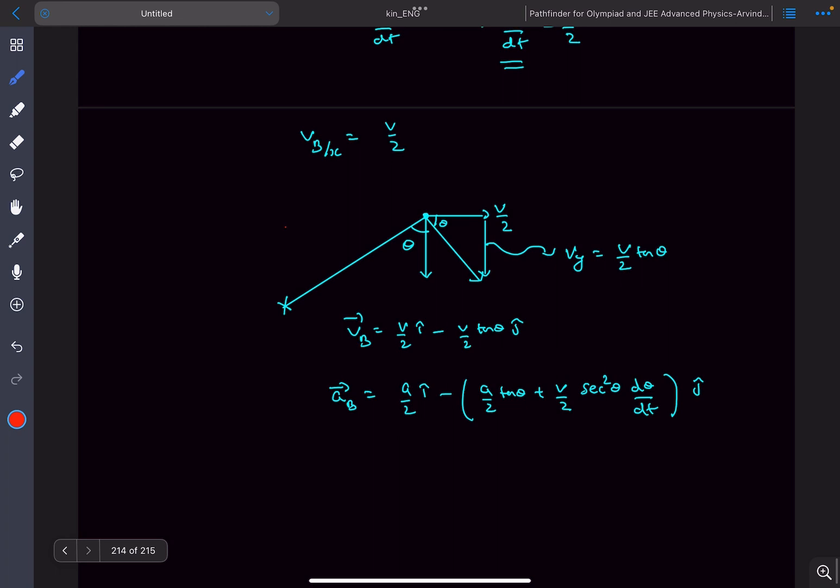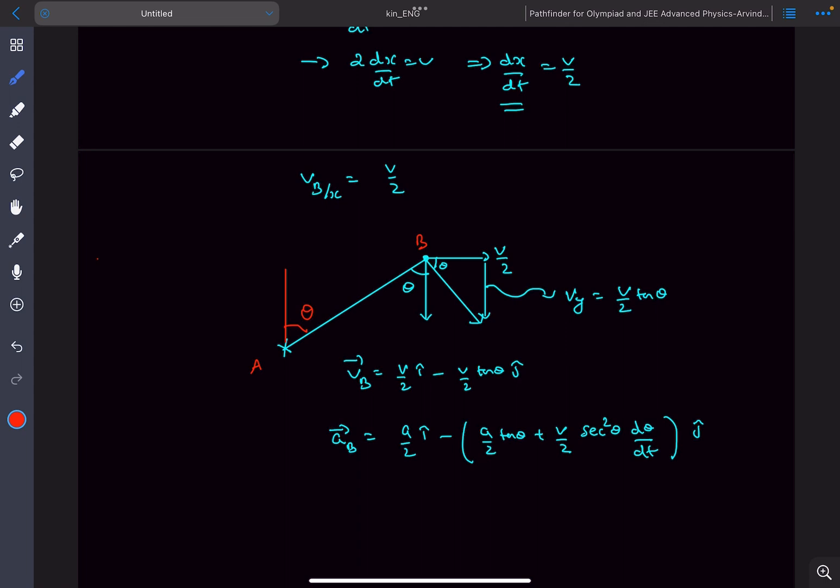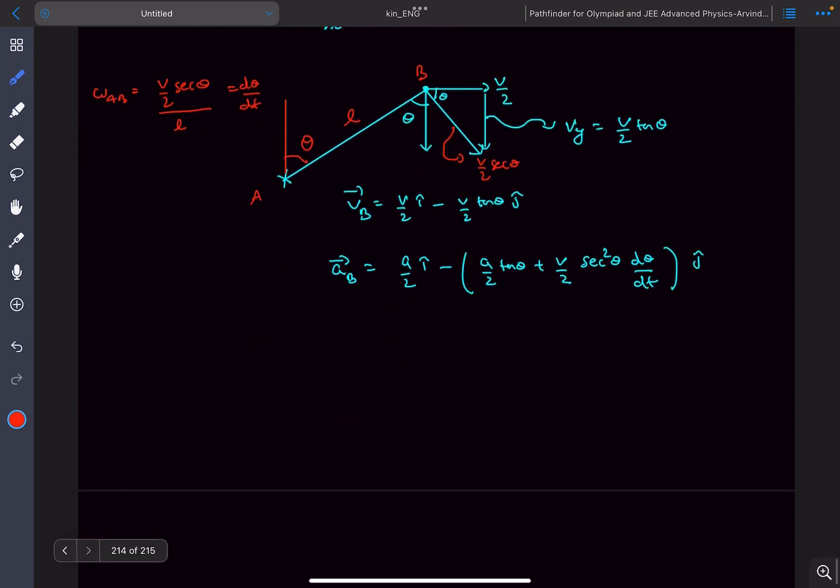Now going back to this rough sketch that we drew, this angle is going to be theta. So what is the omega of the rod AB? The net velocity as it is perpendicular, its magnitude would be the square root of V by 2 whole squared plus V by 2 tan theta whole squared and that will come out to be V by 2 secant theta. So the omega of rod AB will be V by 2 secant theta divided by the length of rod AB which is, let's say for the moment, L. And this will also be equal to d theta by dt. So now we have the value of d theta by dt as well.